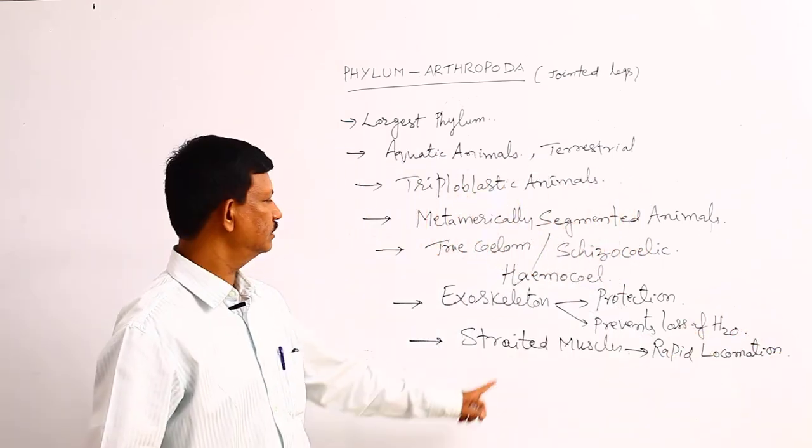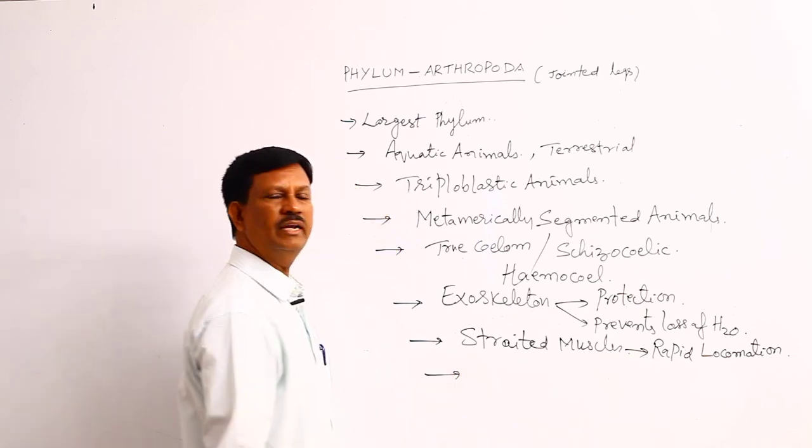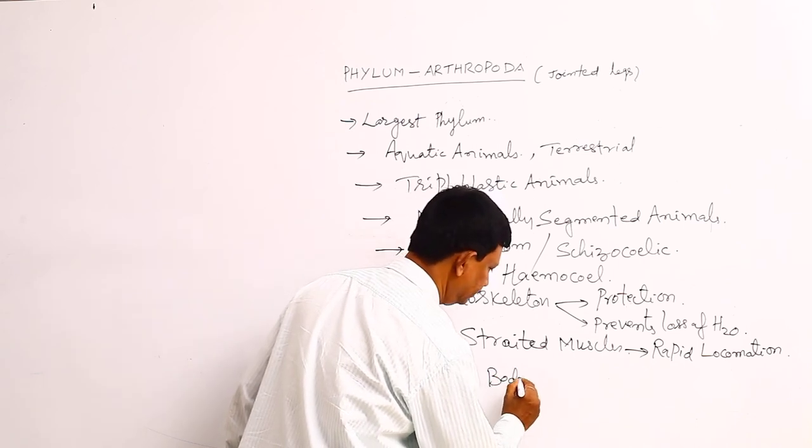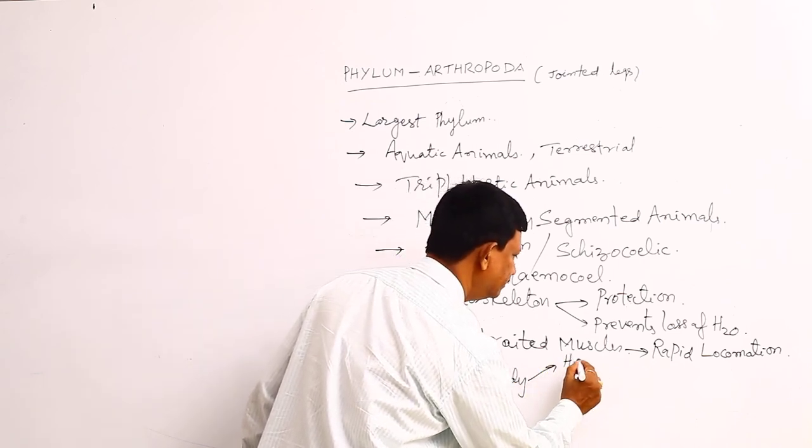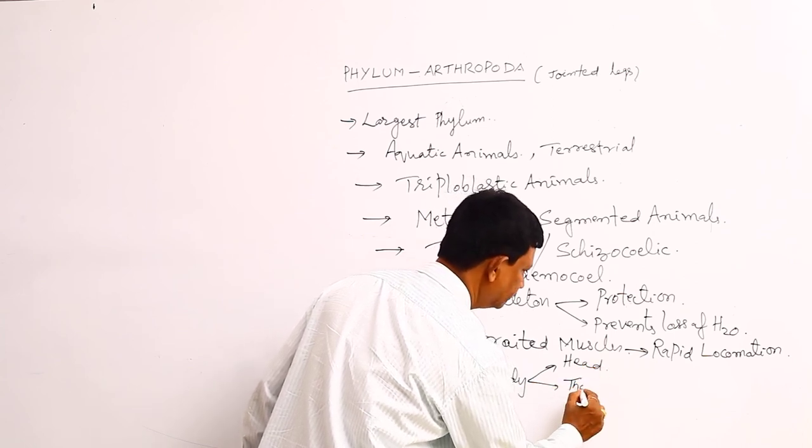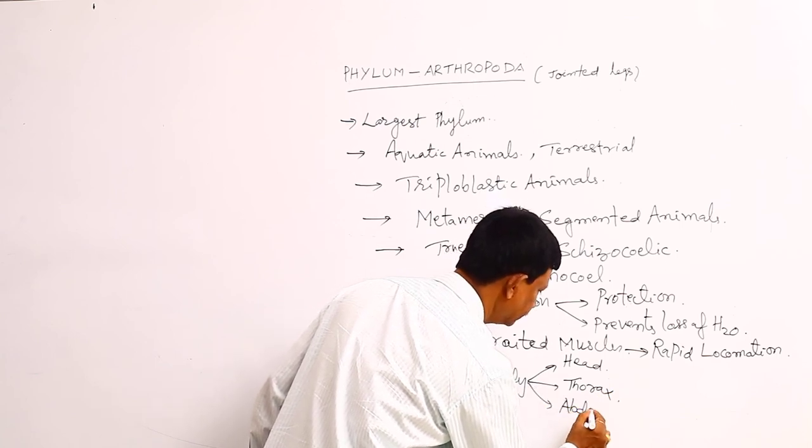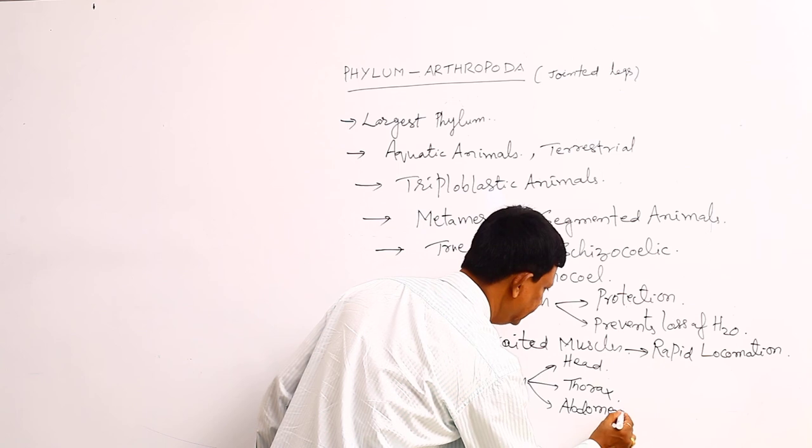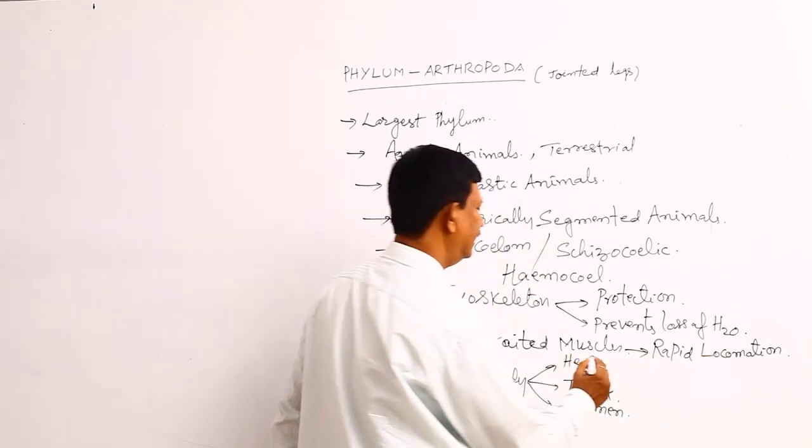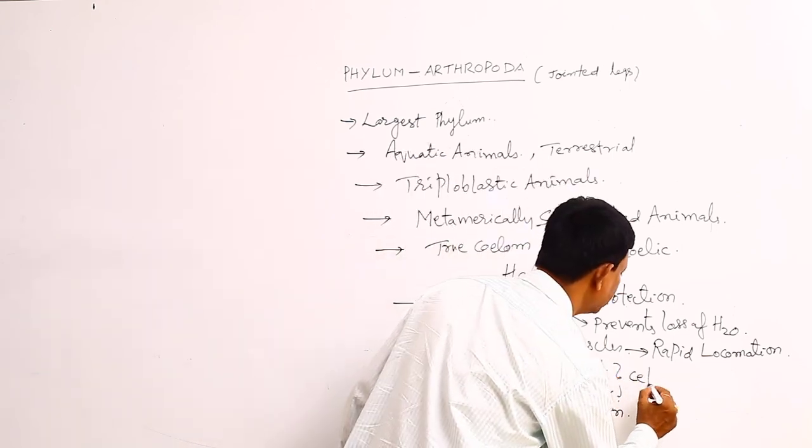The body is mainly divided into three parts: one is the head, thorax, and abdomen. Usually these three parts are present in the body. In some animals, head and thorax are united with each other and form cephalothorax.